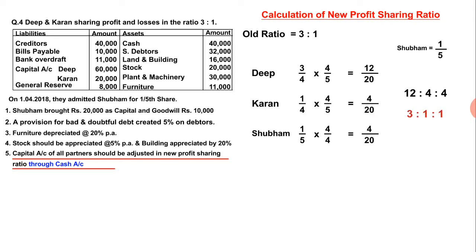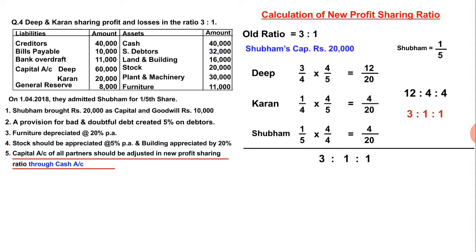With the new ratio 3:1:1, we are going to find the new adjusted capital. The new partner Shubham brought his capital of 20,000. For 1 share, Shubham brought 20,000. So Karan also has to maintain his capital at 20,000, and Deep has to maintain 20,000 × 3 = 60,000. This is the last adjustment — capital accounts of all partners should be adjusted in their new profit sharing ratio.